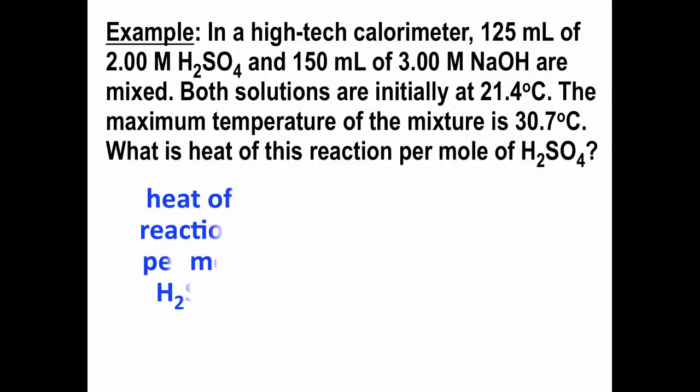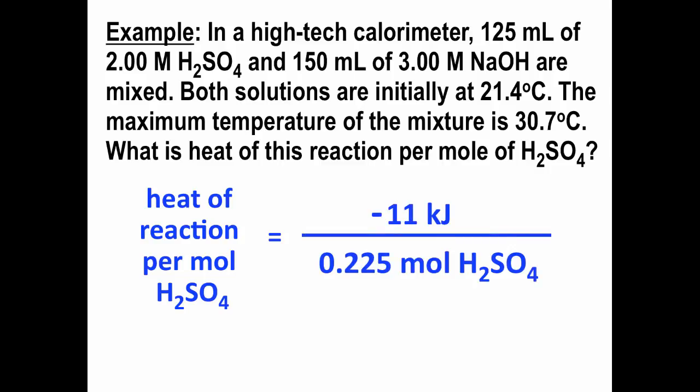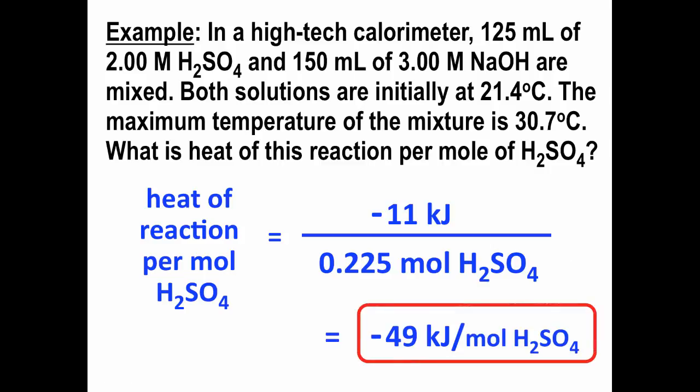So, to do this heat of reaction on a per mole basis, what we have is there were 11 kilojoules of energy given off, so negative 11 kilojoules, per 0.225 moles of sulfuric acid that actually reacted, and that gives us negative 49 kilojoules per mole of sulfuric acid that reacted. And the interpretation would be if one mole of sulfuric acid reacts with two moles of sodium hydroxide, then 49 kilojoules of energy would be given off in that process.